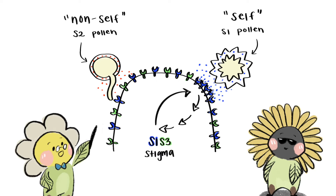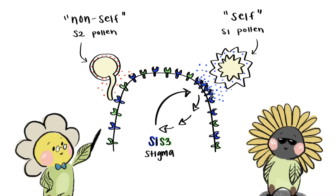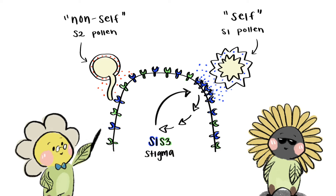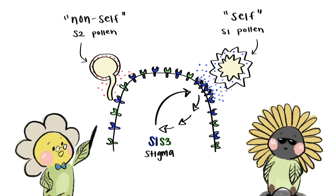This pollen will also deliver its SCR, but it doesn't bind or activate SRK receptors that are S1 or S3. Therefore, there is no signal transduction pathway to inhibit this pollen, and it hydrates, germinates, and grows a pollen tube just like normal.